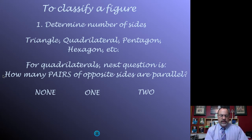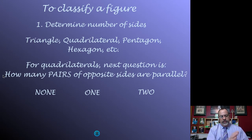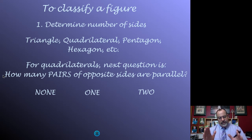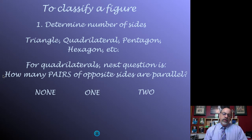If none of the opposite sides were parallel, it was possibly a kite — and there were further requirements we'll talk about in another video. If one pair of opposite sides were parallel, then we called it a trapezoid. And if both pairs of opposite sides were parallel, we called it a parallelogram.